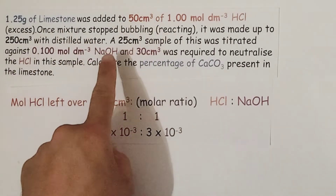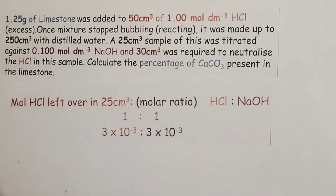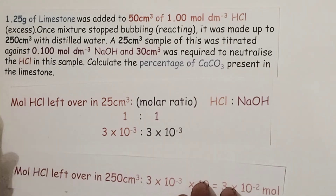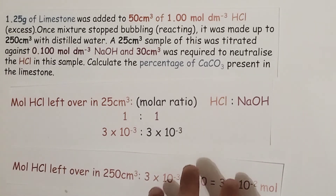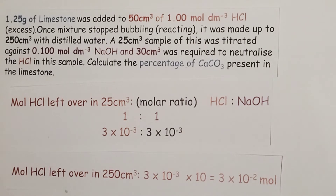That 25 centimetre cubed sample was taken from the larger 250 centimetre cubed volumetric flask amount, so we have to multiply that number of moles by 10 to find out how many moles of hydrochloric acid were in that volumetric flask — that 250 centimetre cubed volume. That gives us 3 × 10⁻² moles of hydrochloric acid, which is all the hydrochloric acid left over after the reaction between the excess hydrochloric acid and the calcium carbonate.